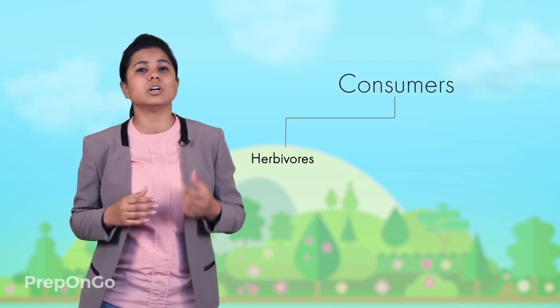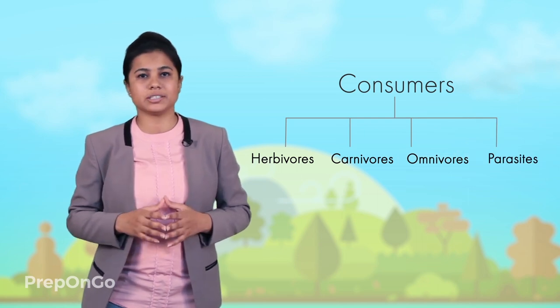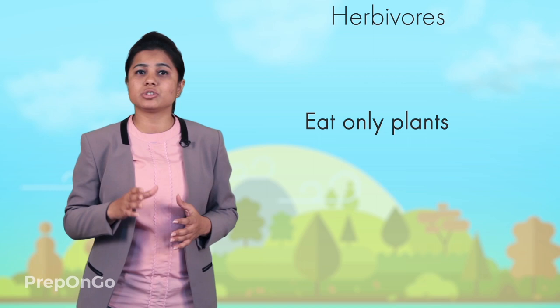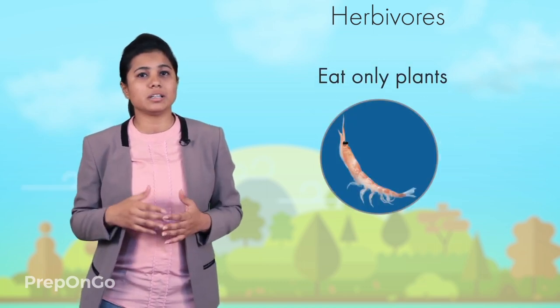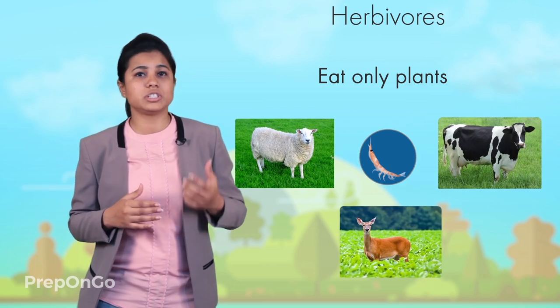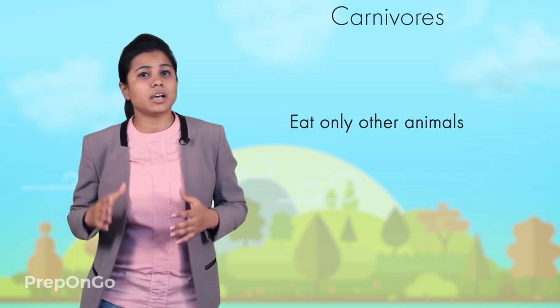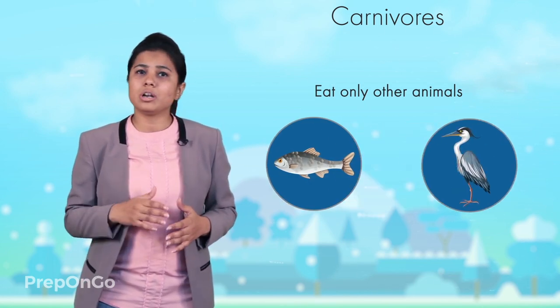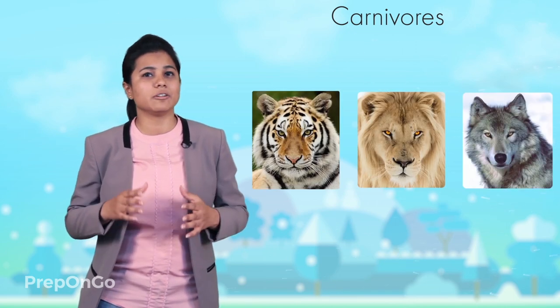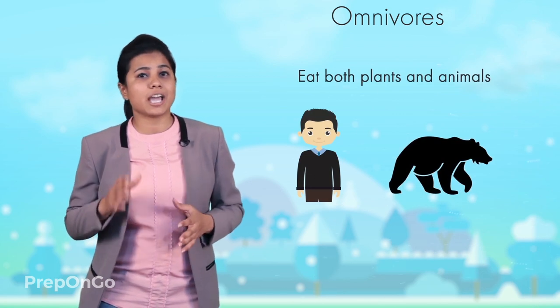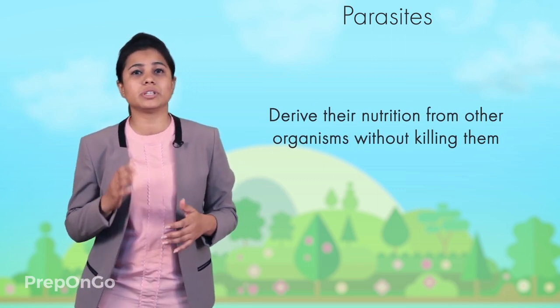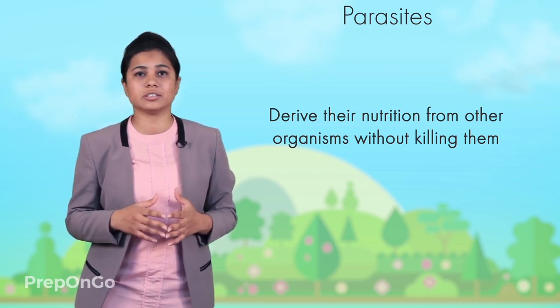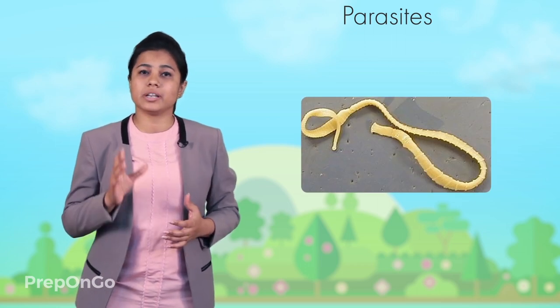Consumers can further be classified into herbivores, carnivores, omnivores, and parasites. Herbivores are the ones which eat plants only — in the pond ecosystem, the zooplanktons are herbivores; other examples include sheep, deer, and cows. Carnivores eat other animals only — in the pond ecosystem, the fishes and birds are carnivores, although not all birds and fishes are carnivores, as some eat plants also; other examples include lions, tigers, and wolves. Omnivores eat both plants and animals, for example human beings and bears. Parasites derive their nutrition from other organisms without killing them, benefiting at the expense of those organisms known as hosts; examples are tapeworms, ringworms, and certain fungi.